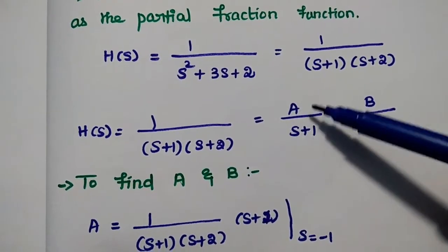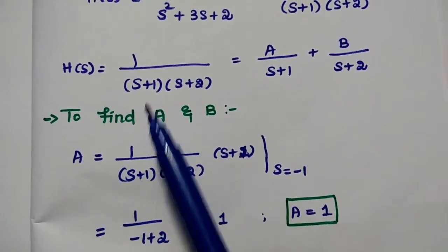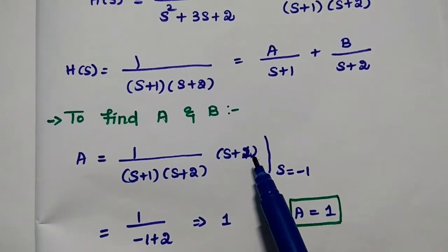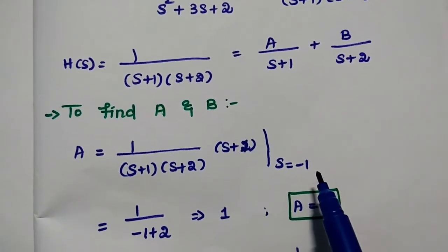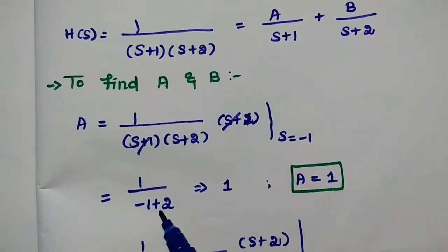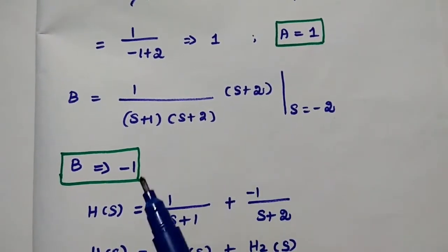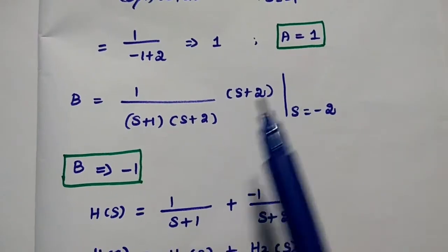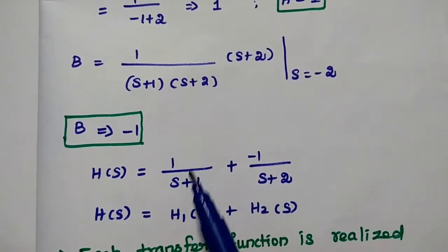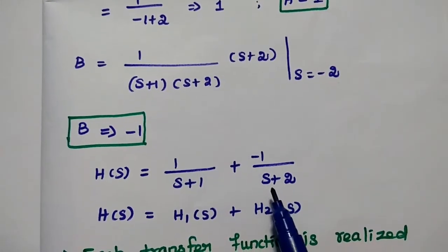We need to find the values of A and B. To find A, we multiply 1 divided by (s+1)(s+2) by (s+1), evaluated at s equals minus 1. Cancelling terms, we get 1 divided by (minus 1 plus 2), which equals 1. So A equals 1. Similarly, B equals minus 1. Substituting these values, H(s) equals 1 divided by (s plus 1) minus 1 divided by (s plus 2).